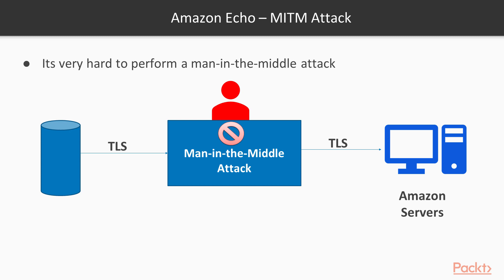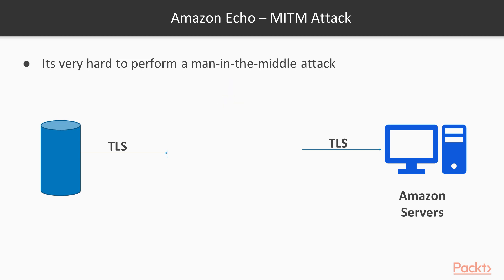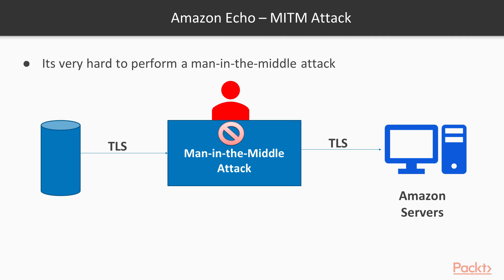Next is the man-in-the-middle attack, also known as sniffing. It is very hard to perform a man-in-the-middle attack on Amazon Echo. On the left-hand side you have the Amazon Echo, on the right-hand side the Amazon servers, and in the middle is the attacker trying to intercept traffic between the device and the servers.